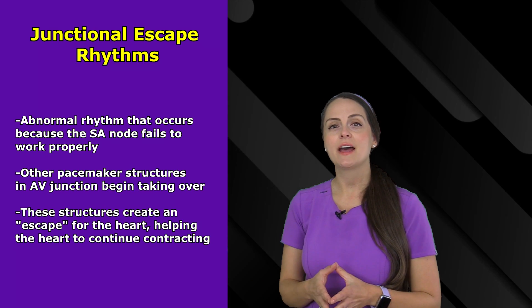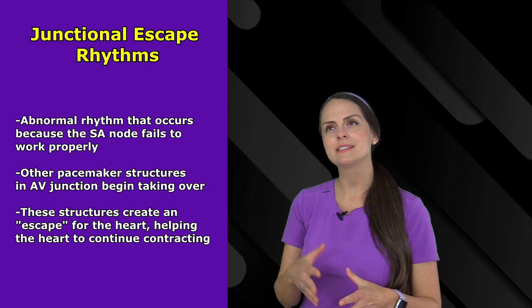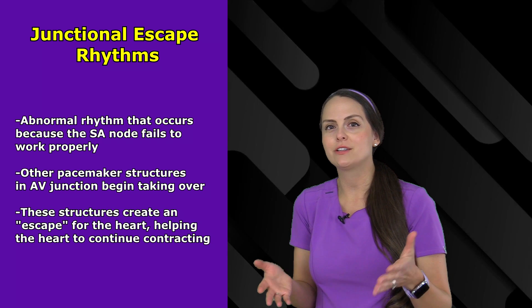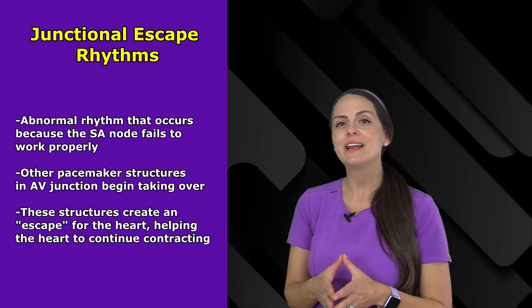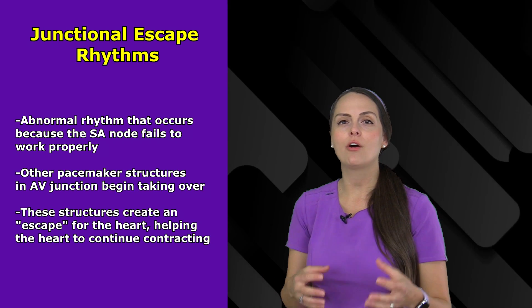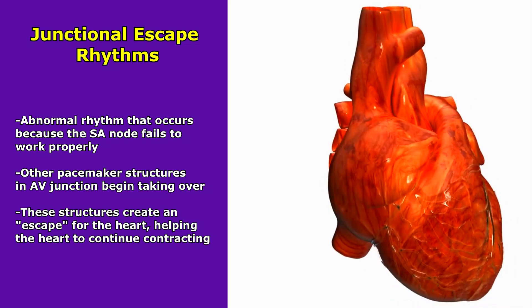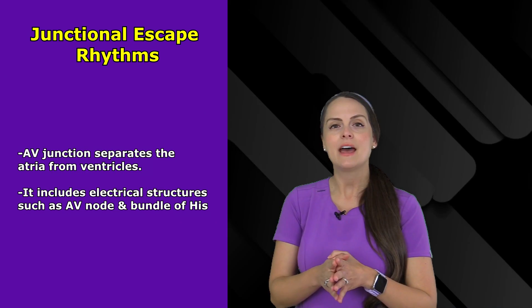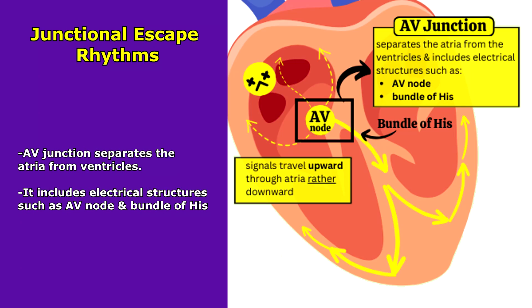These electrical structures help create an escape for the heart, which is why we call it junctional escape — they help the heart continue with its contraction since the SA node really isn't up for the task. The AV junction of the heart separates the atria from the ventricles and it includes electrical structures like the AV node and the bundle of His.